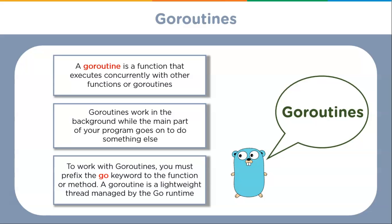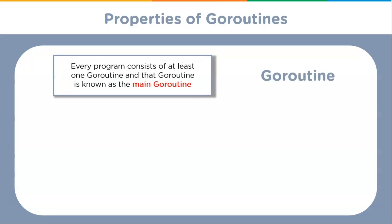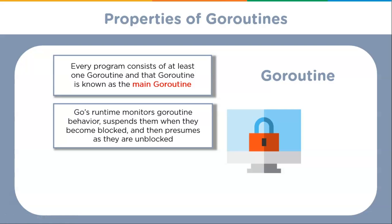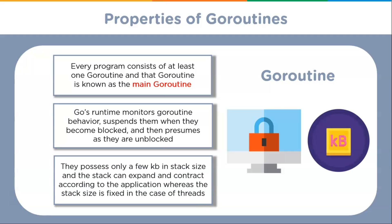Now we'll understand the usage of goroutines with the help of an example. First we will go through the properties of goroutines. Every program consists of at least one goroutine, and that goroutine is known as the main goroutine. Goroutines are deeply integrated with Go's runtime — Go's runtime monitors goroutine behavior, suspends them when they become blocked, and resumes them when they are unblocked. Goroutines are inexpensive compared to threads; they possess only a few KB in stack size, and the stack can expand and contract according to the application, whereas the stack size is fixed in the case of threads.